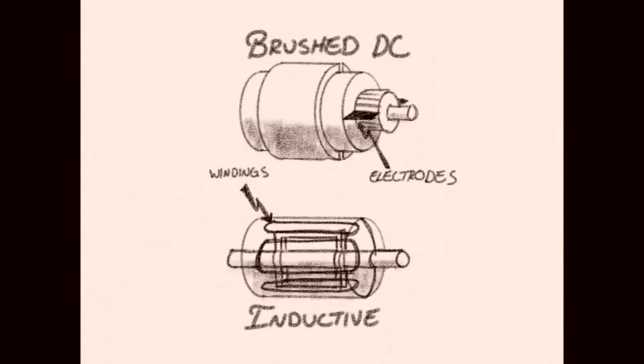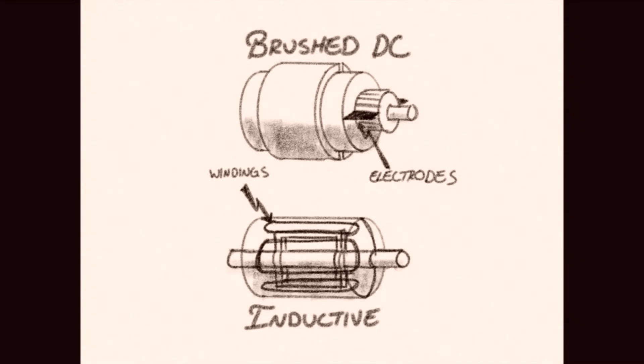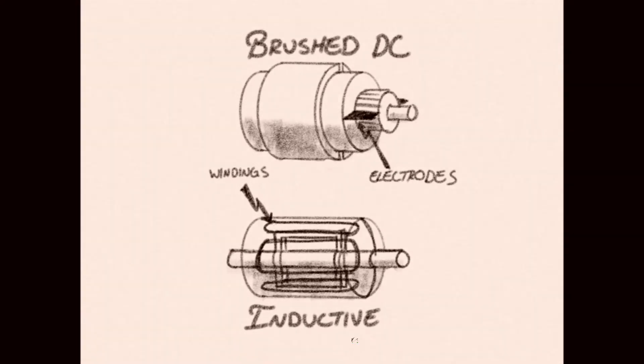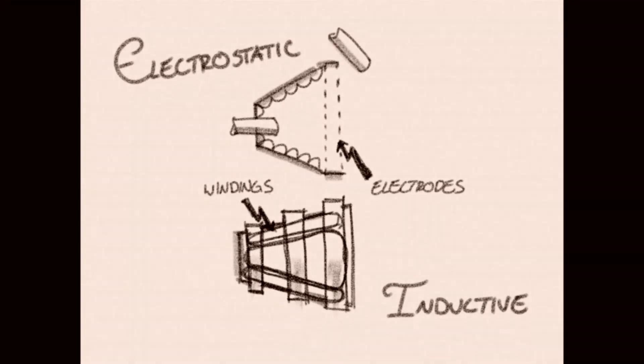Just as our friend the induction motor has less wear than a brush commutated direct current motor, an RMF thruster operating inductively has no electrodes in contact with the plasma to wear out.